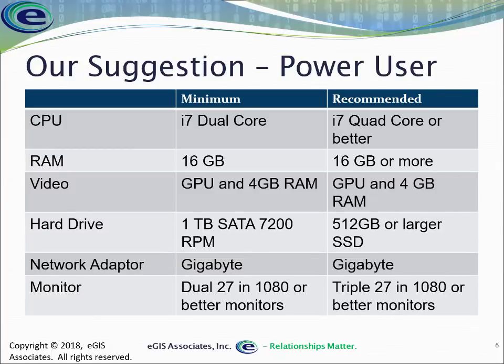If you're a power user — a true hardcore GIS user doing a lot of editing, analysis, working with topologies, linear networks, and so on — then you really need to beef up your machine. We recommend a minimum i7 dual-core, preferably quad-core or better. You're going to be able to leverage all those cores with ArcGIS Pro's new architecture. RAM minimum for a power user is 16GB — don't recommend anything less than that.